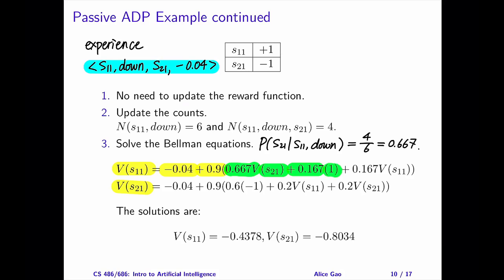And finally, with a probability of another 1 over 6, we are going to try to travel to the right of the intended direction. And in this case, we'll bump into the wall and come back to the same state. And the utility of the same state is V of S11.